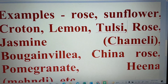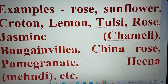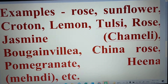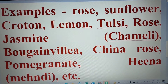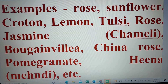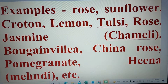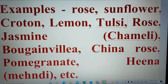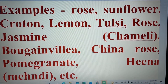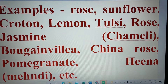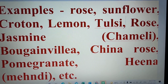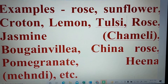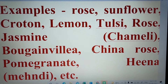Examples: Rose, sunflower, croton, lemon, tulsi, rose, jasmine, chameli, bougainvillea, china rose, pomegranate, heena, mehendi, etc.